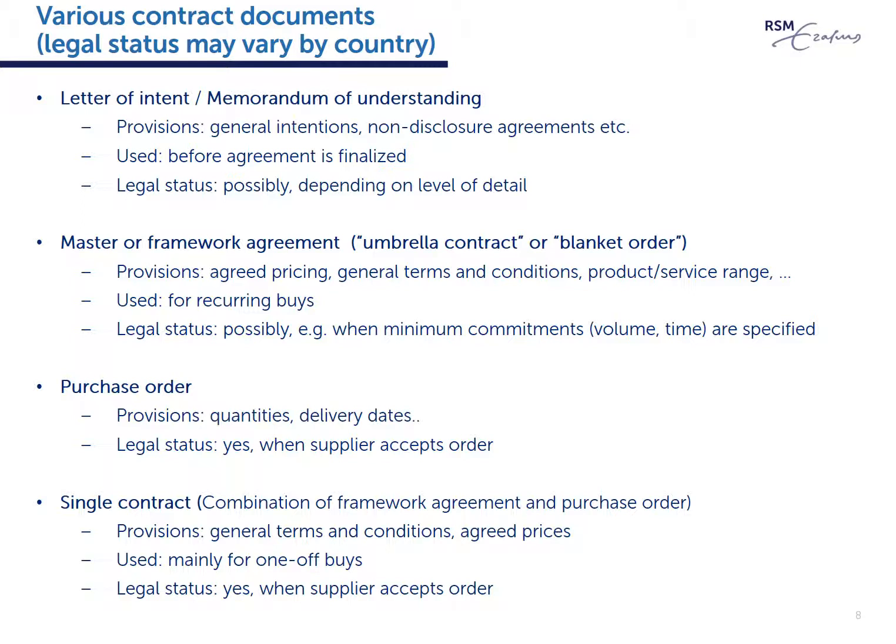It is important to point out that contract elements may sometimes be allocated to different contract documents. Buying organizations could split their purchasing contract into two or three levels: a purchase order, covered by a general framework agreement, which is sometimes preceded by a letter of intent or memorandum of understanding. The slide shows the typical elements of these respective documents, when they are used, and their legal status — noting this may vary by country. There is also the option of a single contract document, typically used for one-off buys such as giving a project assignment to a management consultant.